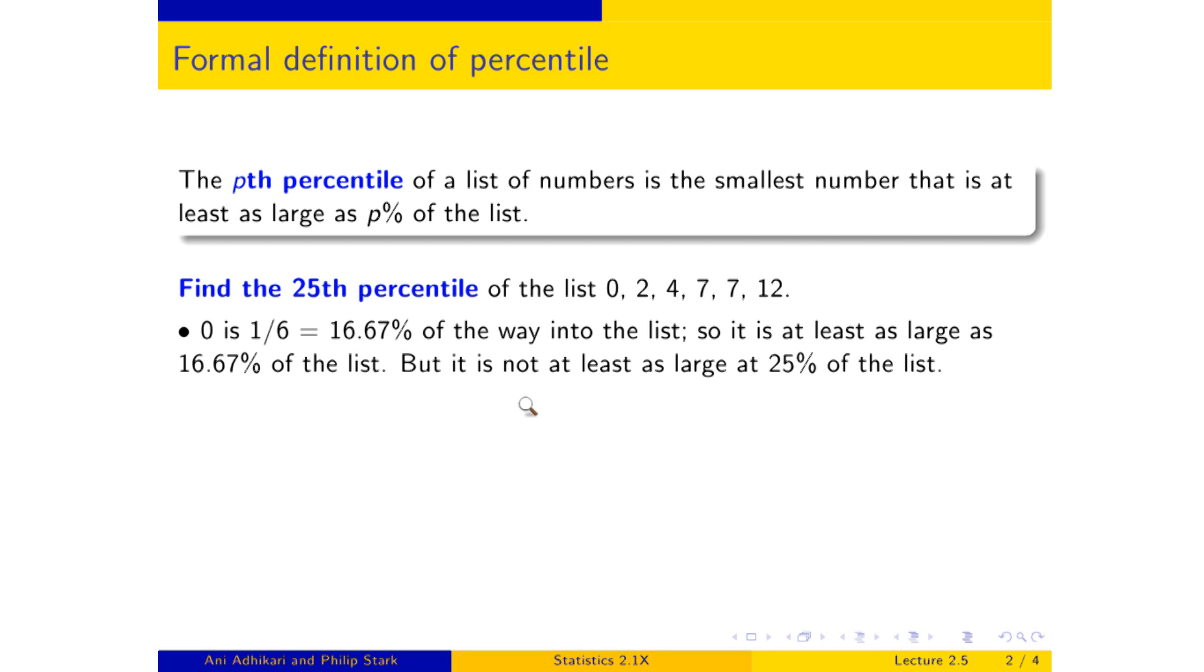So now we look at the next number on the list. And that is 2. And that is one third of the way into the list. Two out of six of the way. And so that is definitely at least as large as 25 percent of the list. 25 percent of the list would be somewhere here, this imaginary entry that does not exist. And that is the first number on this list that's in increasing order for which we can make this claim, that it is at least as large as a quarter of the list. And so therefore, by our definition here, that is our candidate for the 25th percentile.